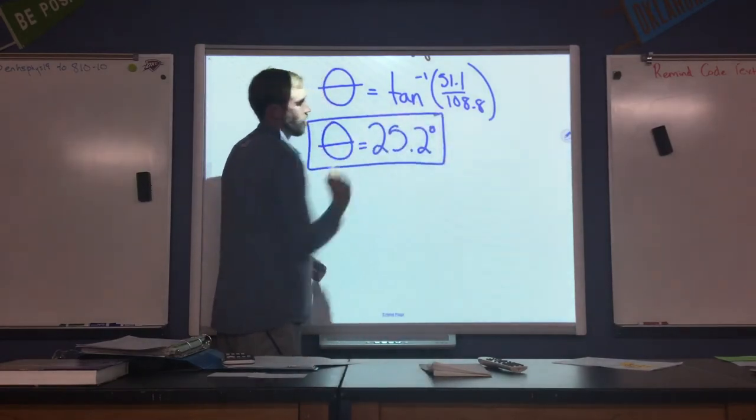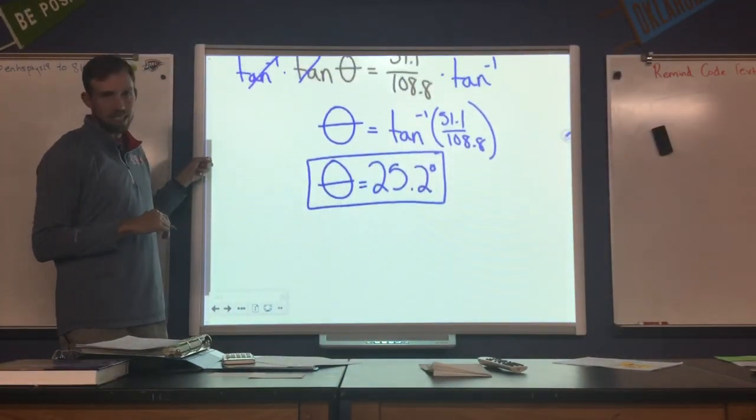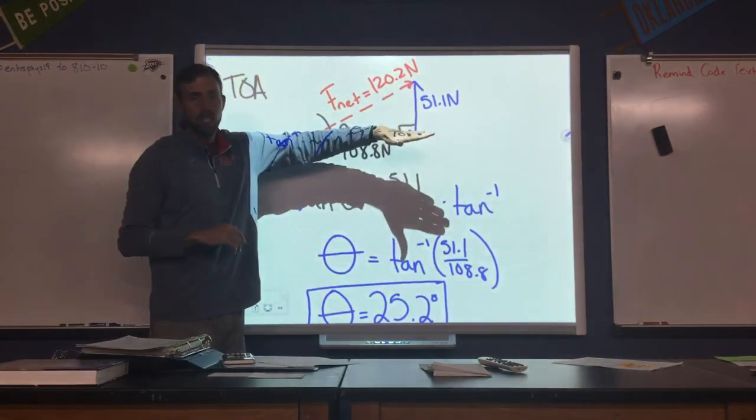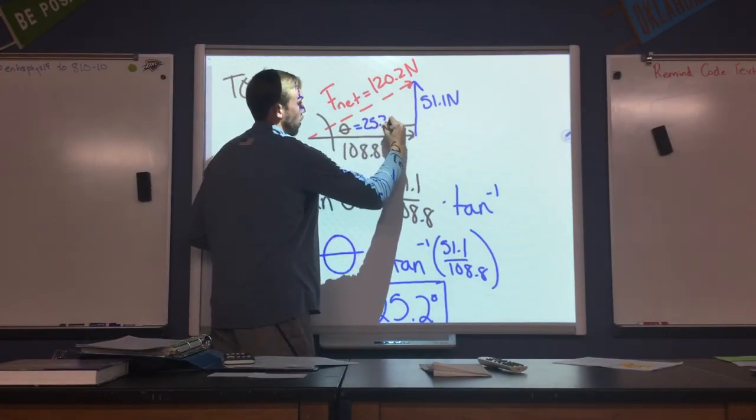So when it says direction, that tells us we're looking for an angle. And when it says measured from east, that just means based off of our direction to the east. So this would be 25.2 degrees.